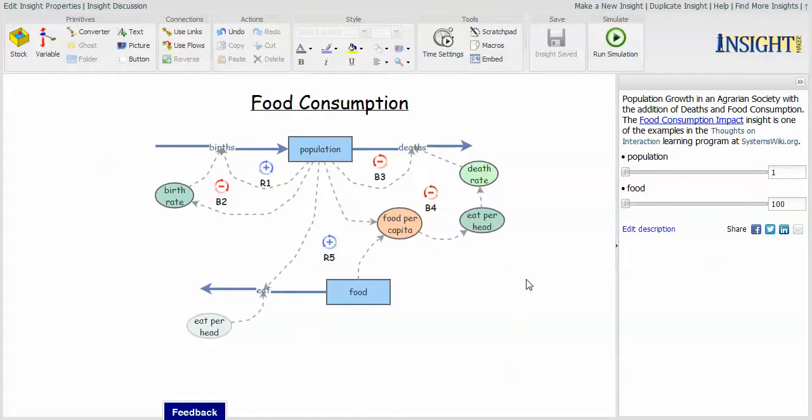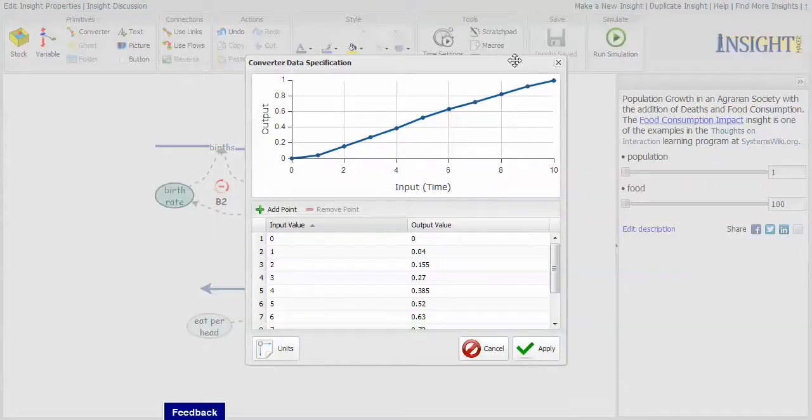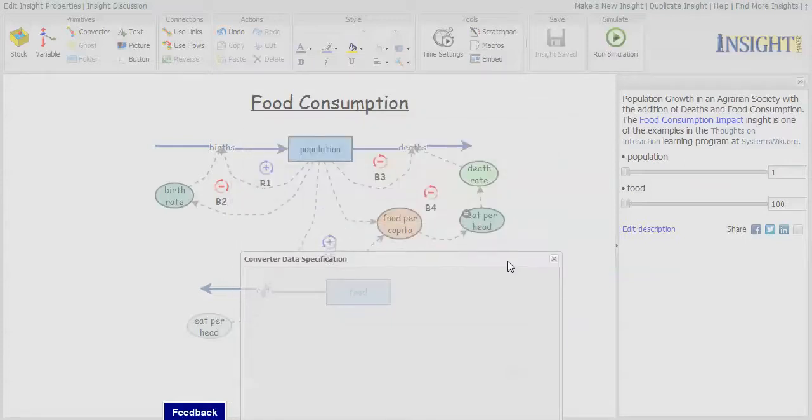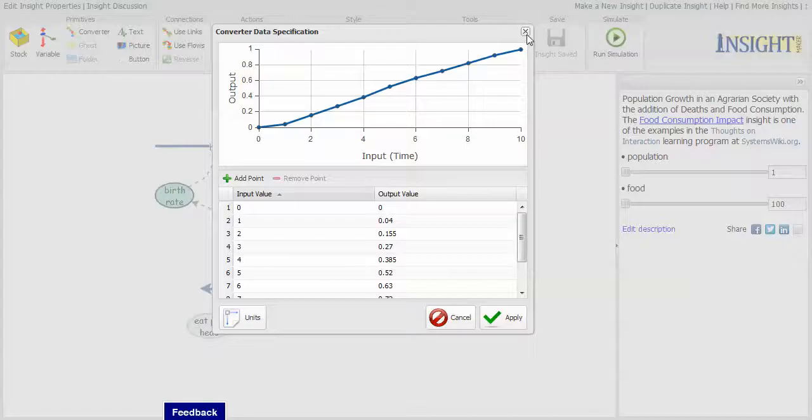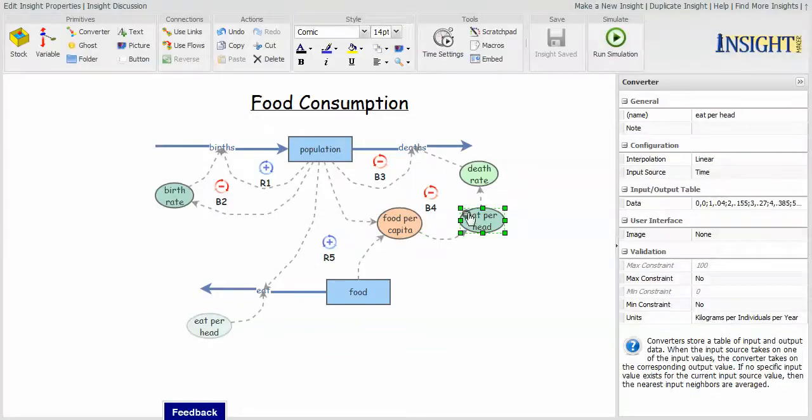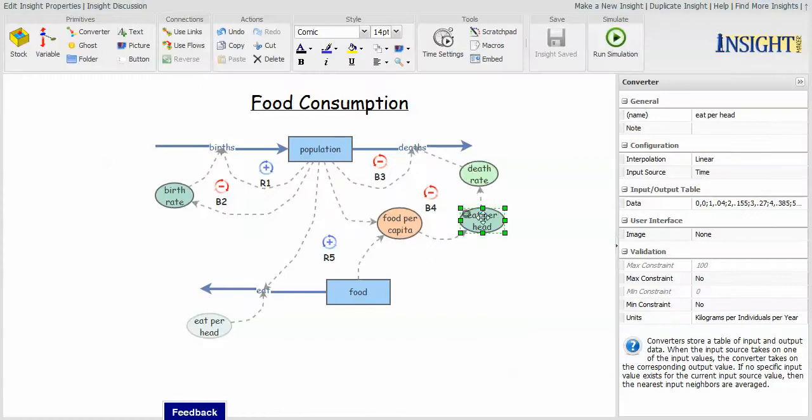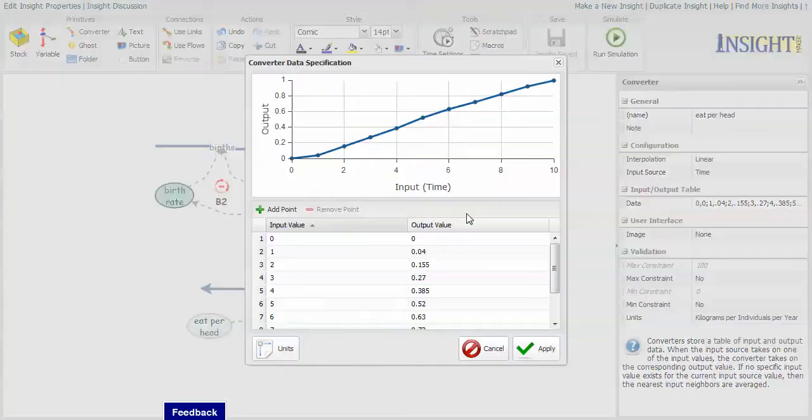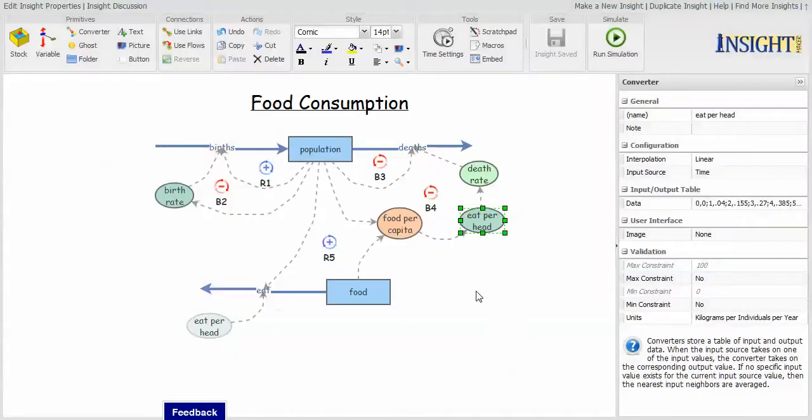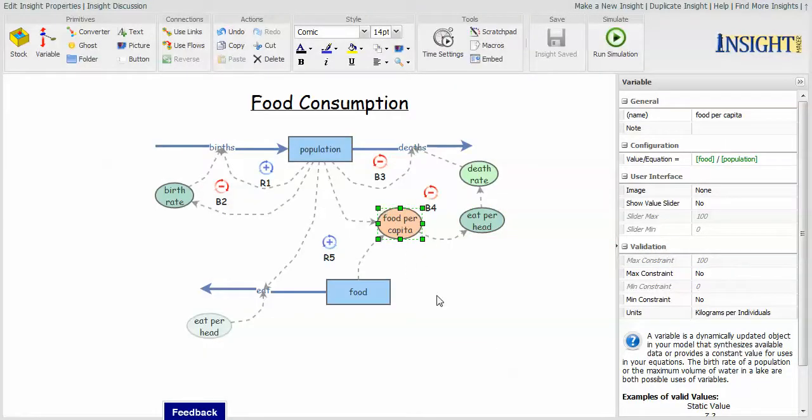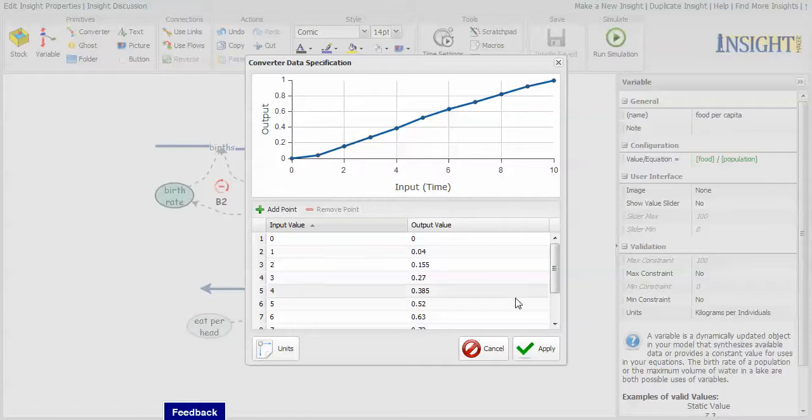And here is a similar model for food consumption where there are several converters. This is a time input on this one, so the food per capita. Food per capita input is time. Well, that's interesting. I guess I'm going to have to go take a look at this one and figure out why the input for this is time, because it is, in fact, this variable, which is units of kilograms per minute.